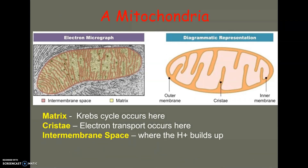So this is a mitochondria — it's not the best labeling job, so I'm going to relabel it. The matrix, where the Krebs cycle happens, is right here in the very center. That's our matrix — all of this inside the middle. There are two membranes here: an outer membrane and an inner membrane.